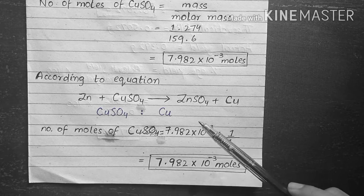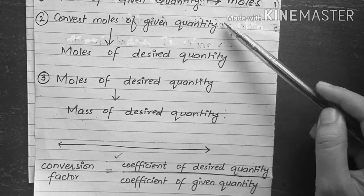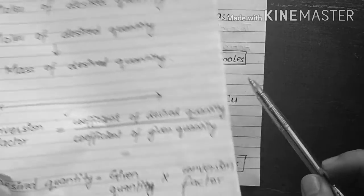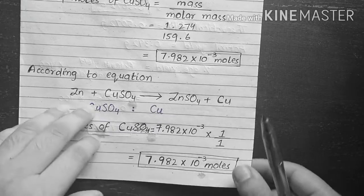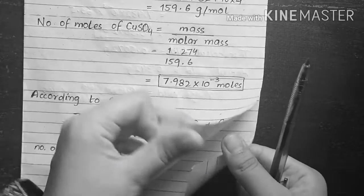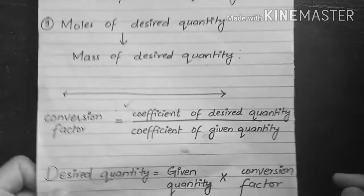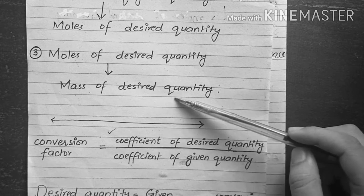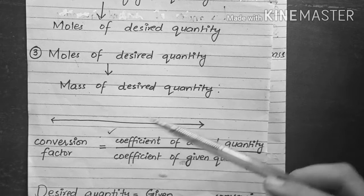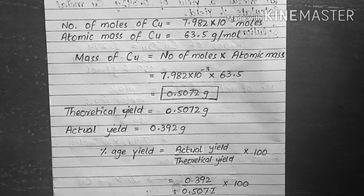The answer comes out to be 7.982 × 10⁻³ moles of copper, completing step 2. Now in step 3, we convert the moles of the desired quantity into the mass of the desired quantity. To convert moles of copper into mass of copper, we multiply by the atomic mass of copper, which is 63.5 grams per mole from the periodic table.